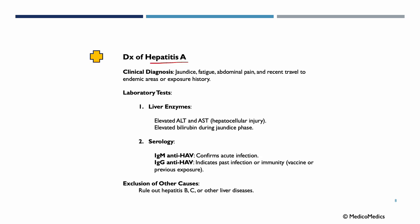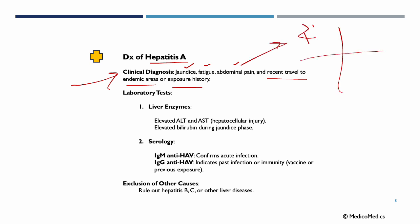How do we diagnose Hepatitis Type A? First, clinical diagnosis — we look for jaundice, fatigue, abdominal pain, and recent travel to endemic areas or exposure history. Abdominal pain is expected in the right upper quadrant because that is where the liver is situated — remember to consider this in the anatomical position, so your left is the patient's right. Based on that, the lab tests we look for include liver enzyme tests.